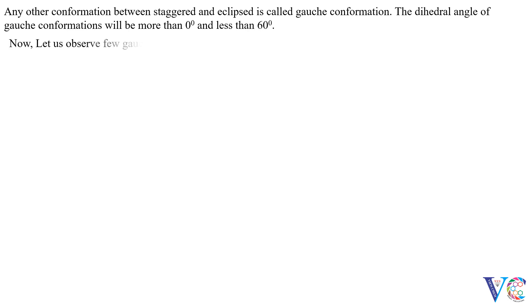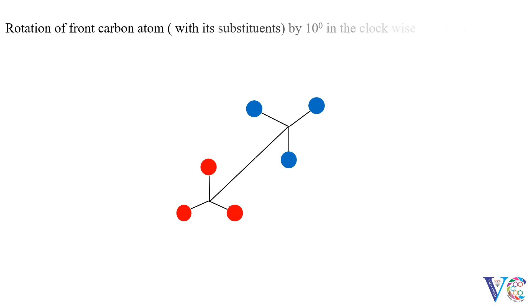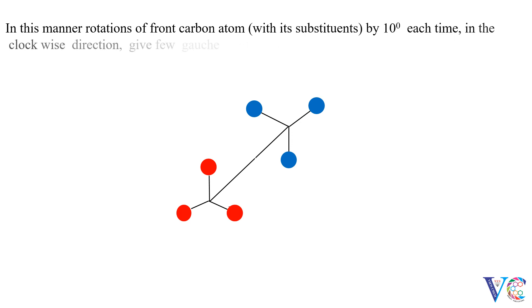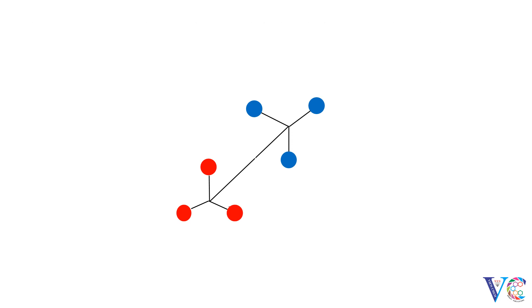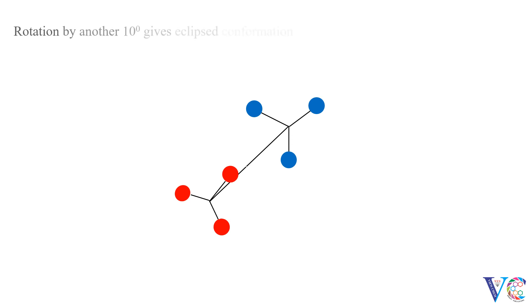Now let us observe a few gauche conformations. Rotation of the front carbon atom with its substituents by 10 degrees in the clockwise direction gives a gauche conformation. In this manner, rotations of the front carbon atom with its substituents by 10 degrees each time in the clockwise direction give a few gauche conformations. Rotation by another 10 degrees gives the eclipsed conformation.